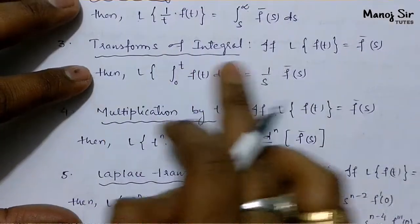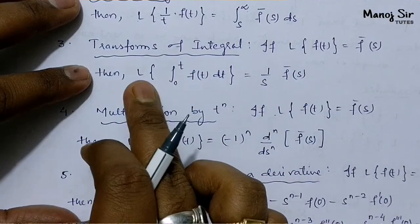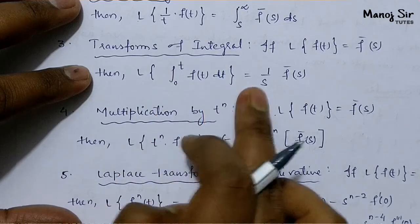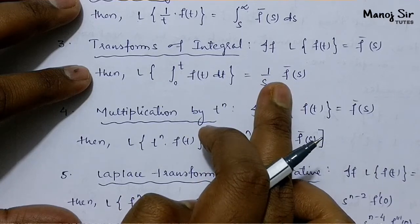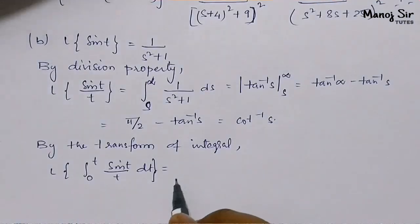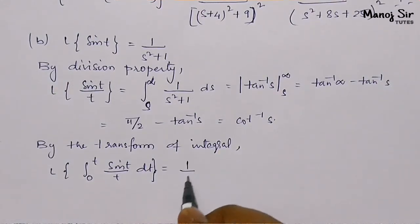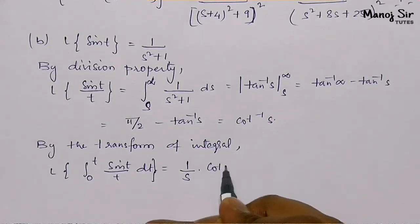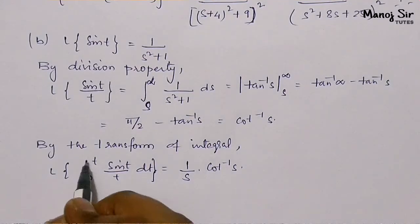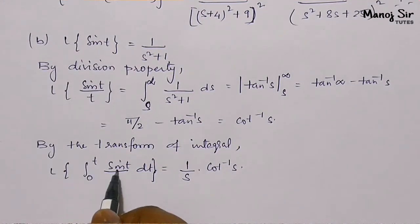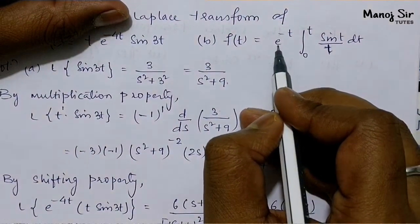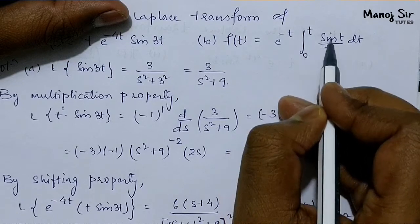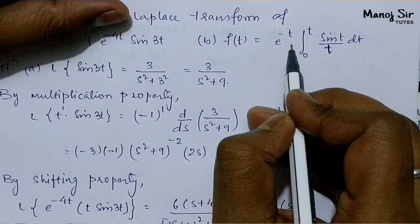By the integral property: if L{f(t)} = F̄(s), then L{∫₀ᵗ f(t) dt} = (1/s)·F̄(s). So L{∫₀ᵗ (sin t / t) dt} = (1/s)·cot⁻¹(s). But we still need to handle the e^{−t} multiplier, so we apply the shifting property.